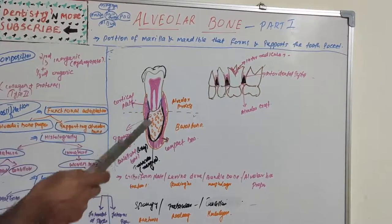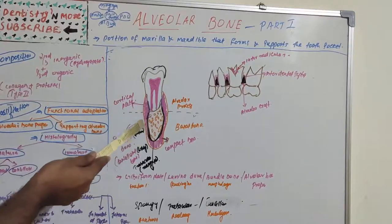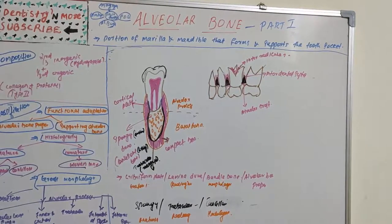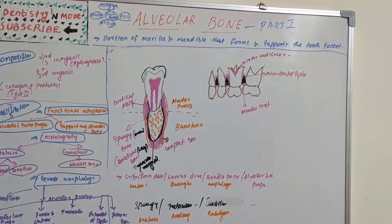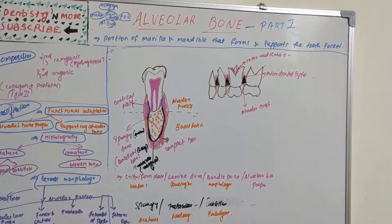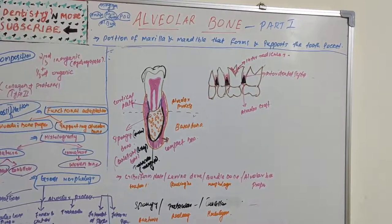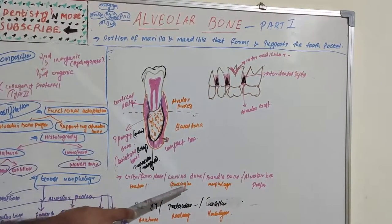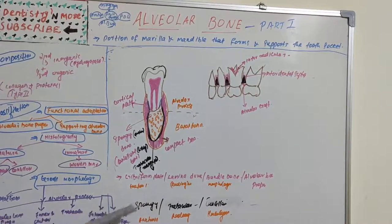Alveolar bone proper is important in radiography. The cribriform plate is the anatomical landmark term; lamina dura is the radiographic term for the white line covering the root seen on radiographs. Bundle bone is also part of alveolar bone proper — it has both bundle bone and lamellar portions. So the synonyms are: cribriform plate (anatomical term), lamina dura (radiographic term), bundle bone, and alveolar bone proper (morphological terms).